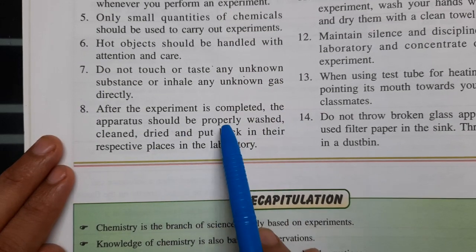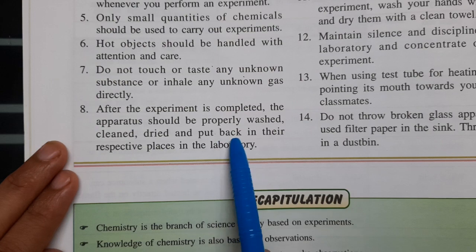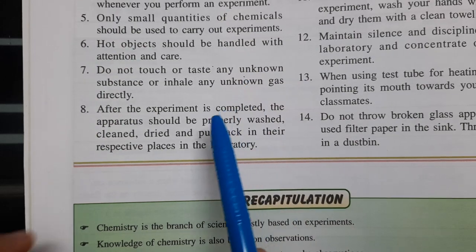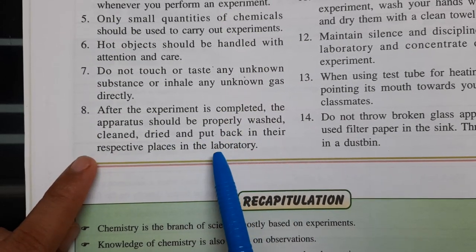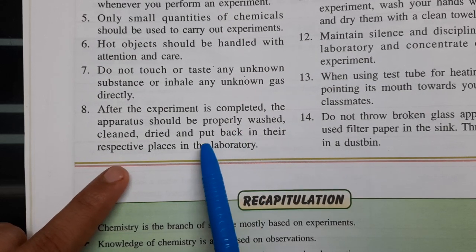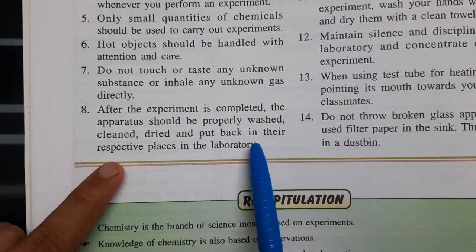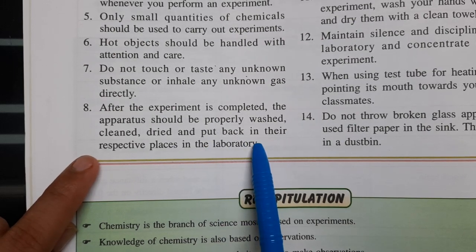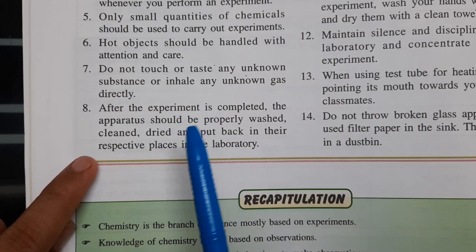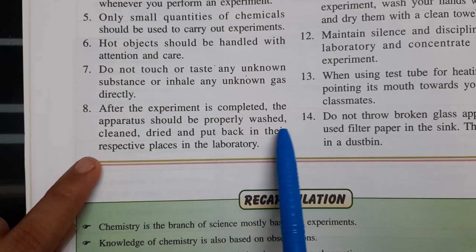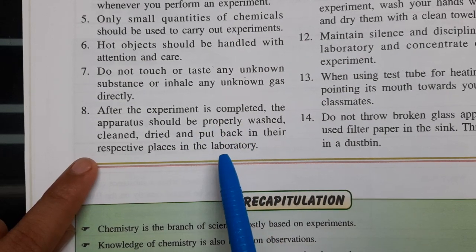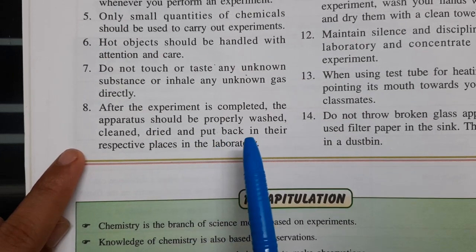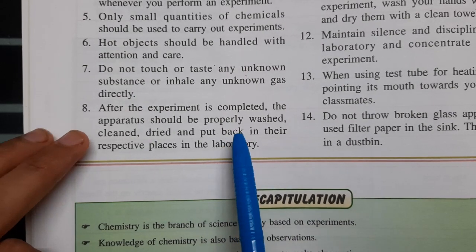Next: after the experiment is completed, the apparatus should be properly washed, cleaned, dried, and put back in their respective place in the laboratory. After finishing your experiment, wash and clean all apparatus and arrange them properly in their designated places. For example, reagent bottles should go back on the reagent shelf, and all other apparatus should be returned to their specific places.